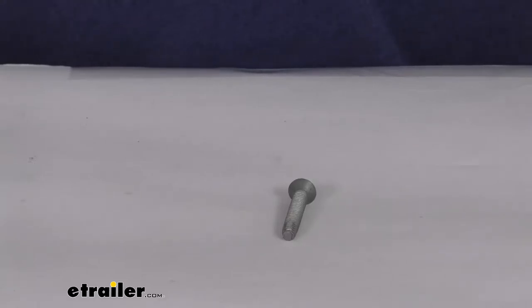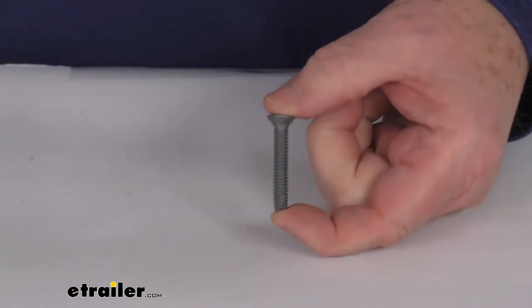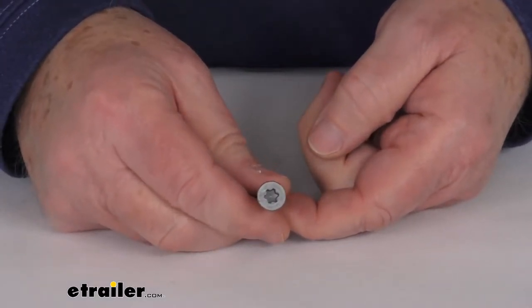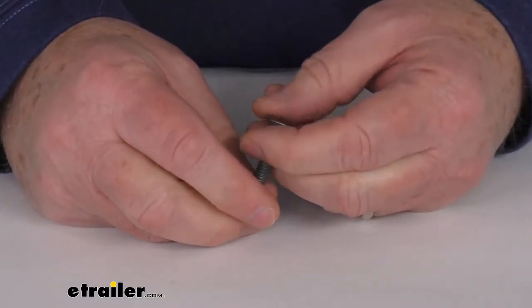Hello everybody, this is Jeff at eTrailer.com. Today we're going to take a look at this one and a half inch long Torx trailer floor and wall liner screw for ACQ treated wood.